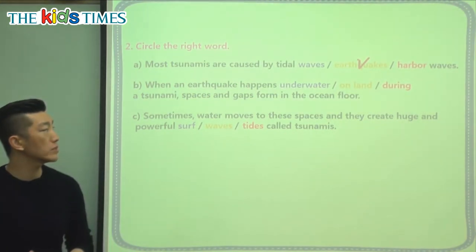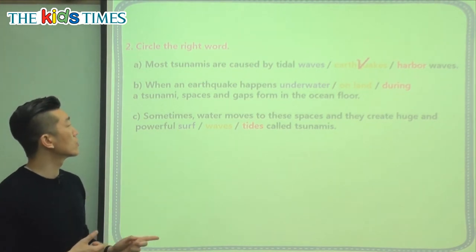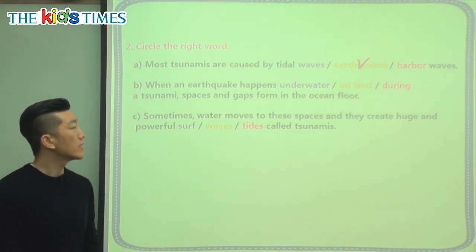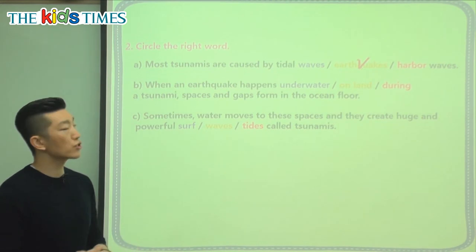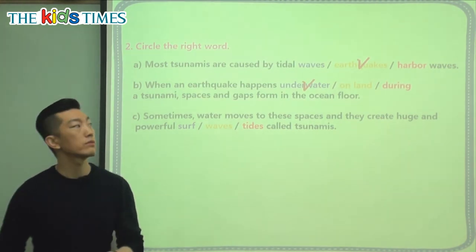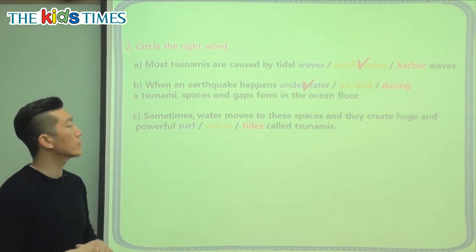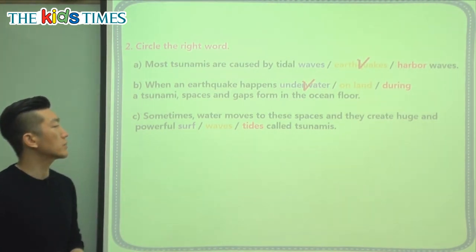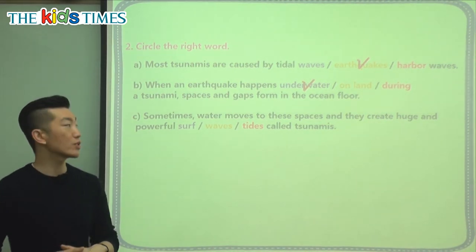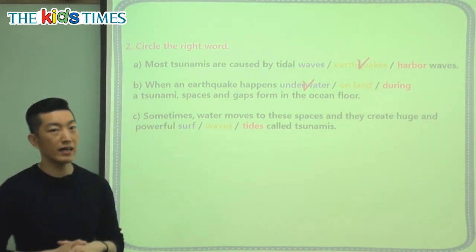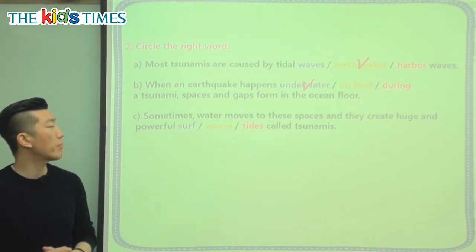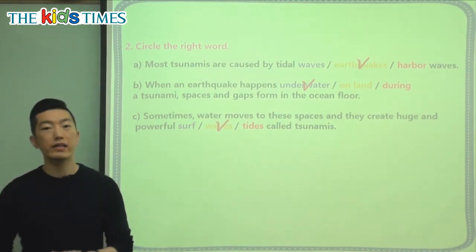Part B says: 'When an earthquake happens' — is it underwater, on land, or during a tsunami? — 'spaces and gaps form in the ocean floor.' When we're talking about the floor of the ocean, that's not on land and it's not during a tsunami. The correct choice is underwater — that's where the earthquake happens, deep under the ocean floor. For the last question: 'Sometimes water moves to these spaces and they create huge and powerful something called tsunami.' Not a surf and not tides — the correct answer is the powerful waves called tsunami.